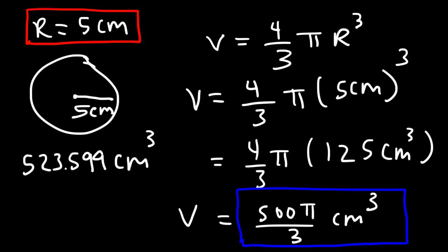If you use 3.14 instead of the exact value of pi, the answer you would get is 523.3 cubic centimeters. It's not exactly the same, but they're close enough. If you use the exact value of pi, you should get 523.599.